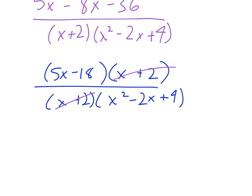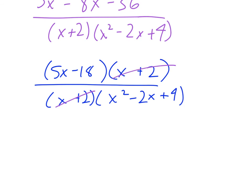So simplifying that all the way down to its lowest terms, we end up with that 5x minus 18 over x squared minus 2x plus 4. And there we go.